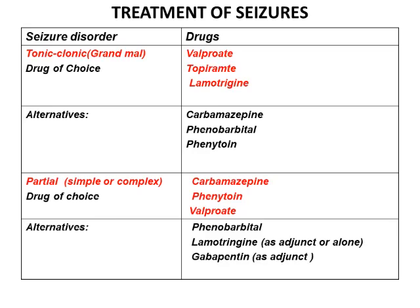This is basically the treatment of seizures. For tonic-clonic seizures, also known as grand mal seizures, the drug of choice is valproic acid. Alternate options include topiramate or lamotrigine — we have alternates available. Carbamazepine is also used.